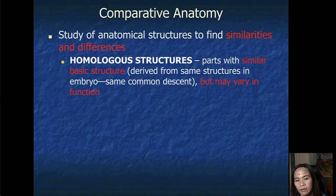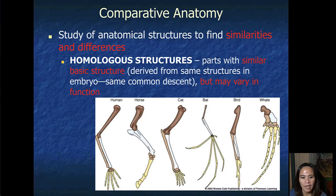One evidence of evolution is the homologous structures. These are parts with similar basic structure, which is derived from the same structure in an embryo, which is the same common descent, but may vary in function. So here's an example. All of these are homologous structures. The human bones, horse, cat, birds, bat, and whale, all of these they have similar bone structures. But then again, the function of each of these structures are different, which is why it's called homologous structure.